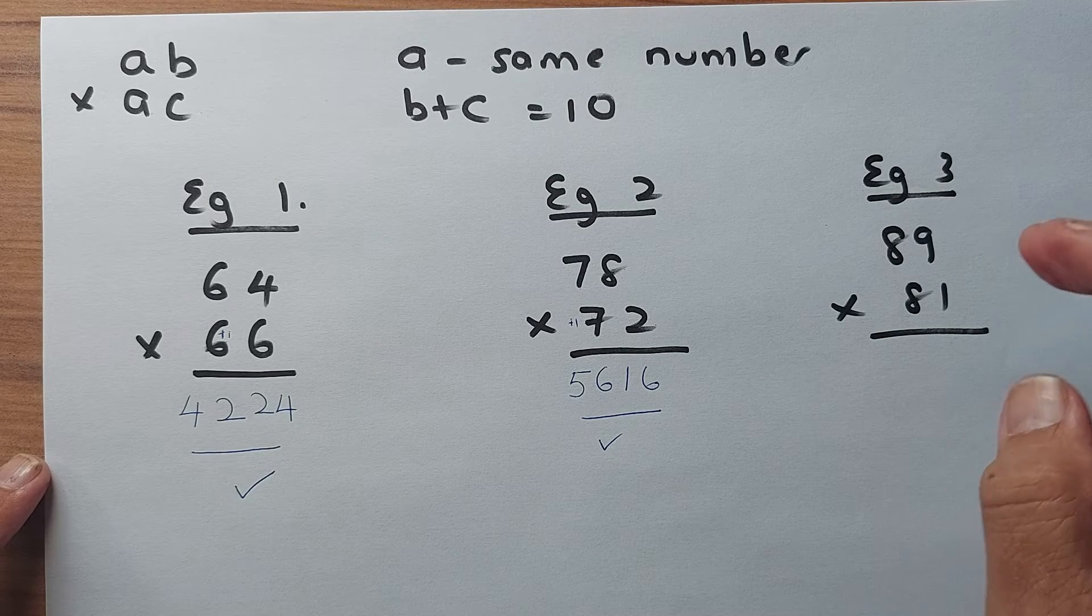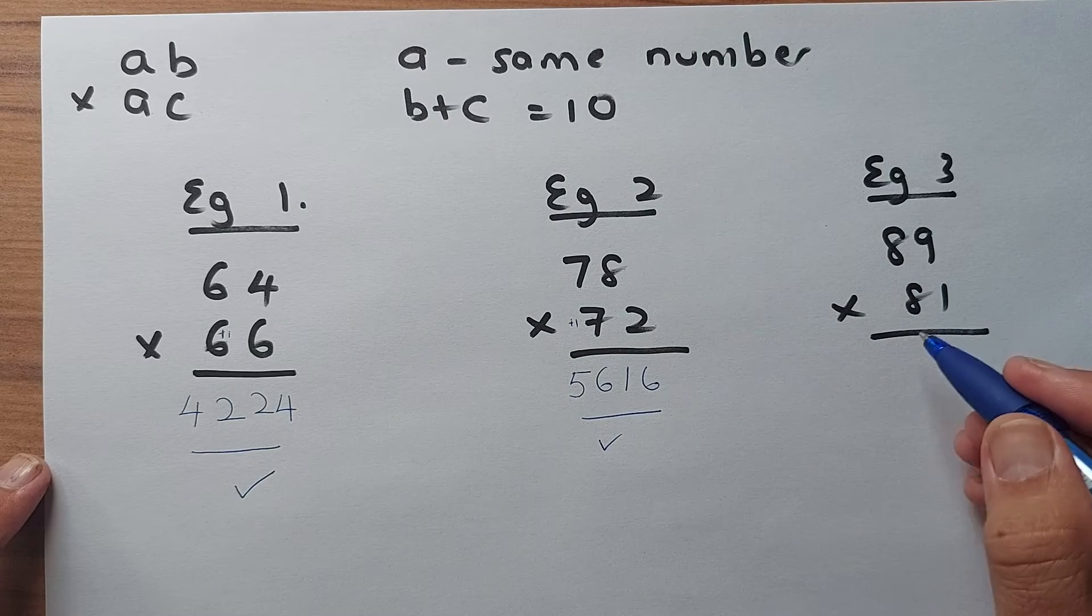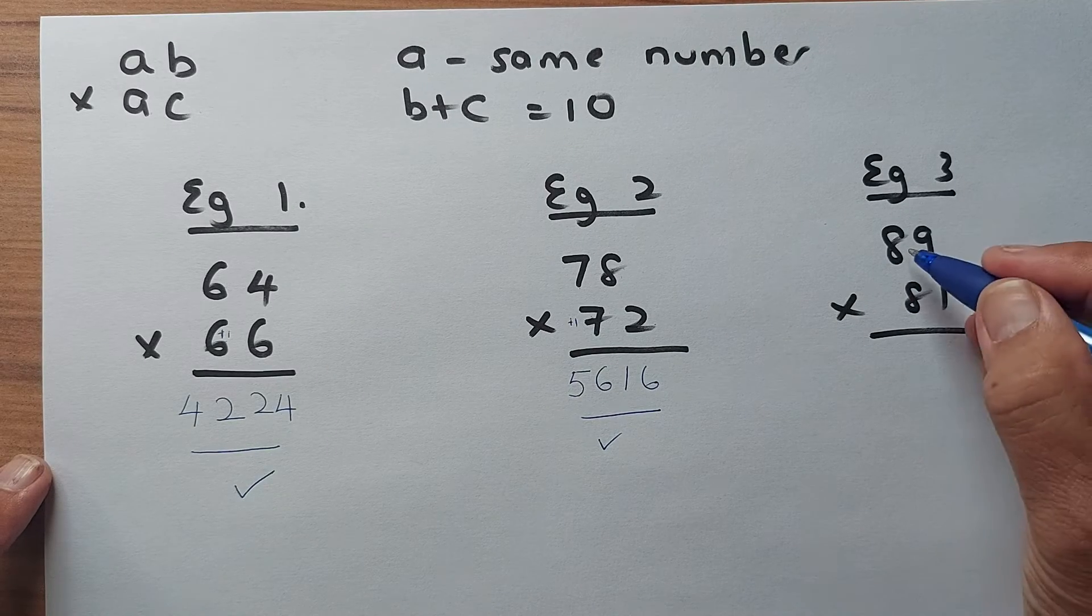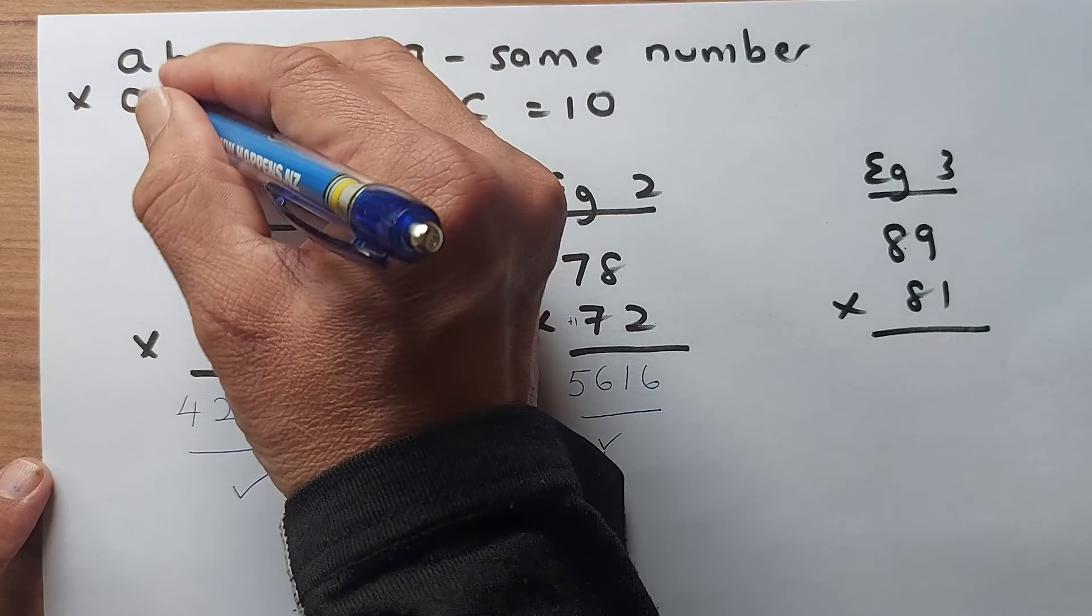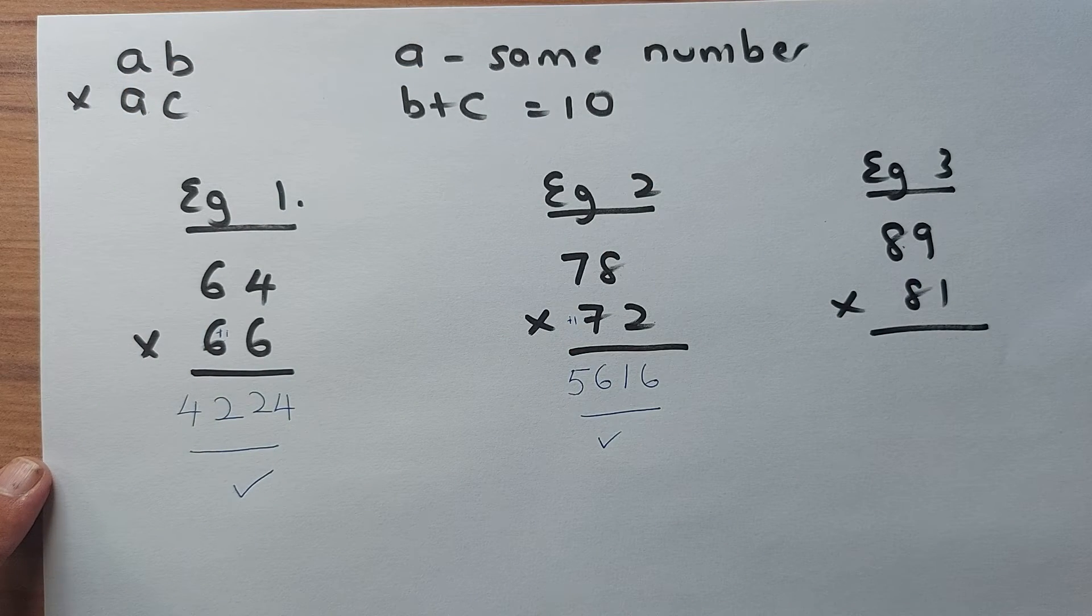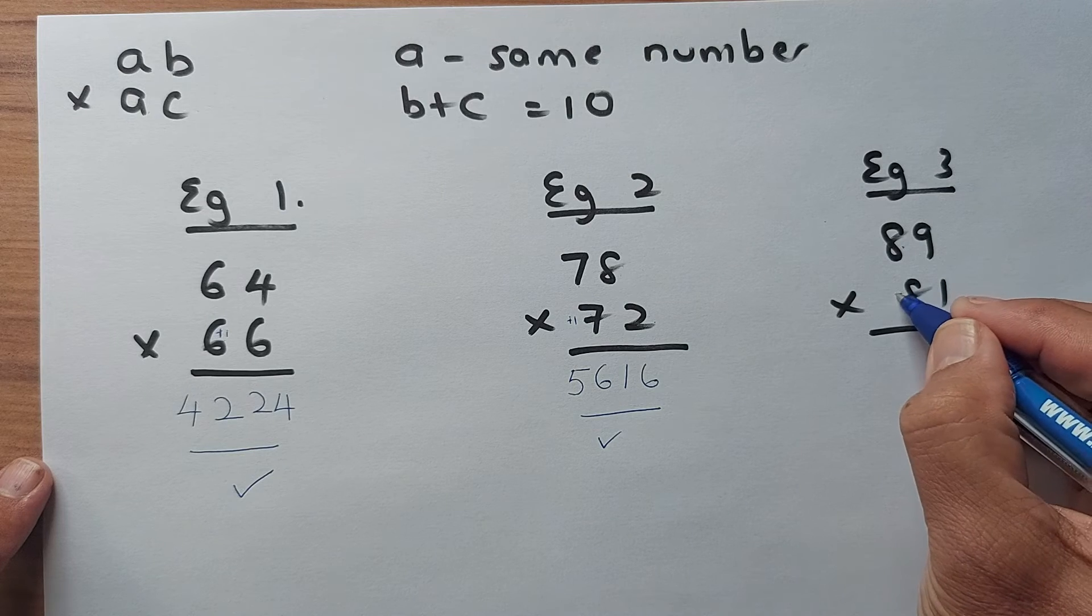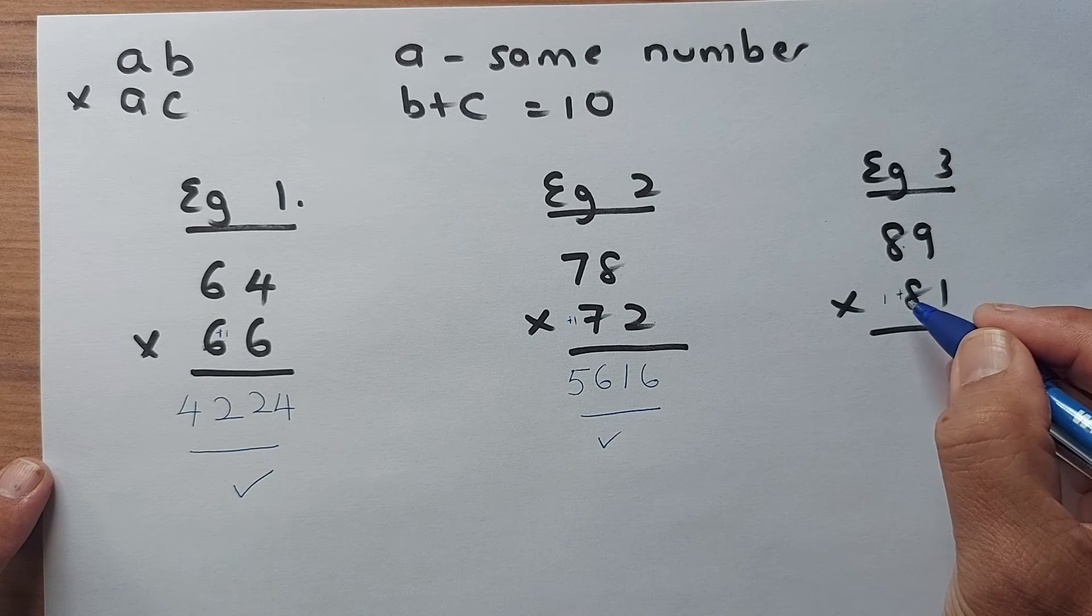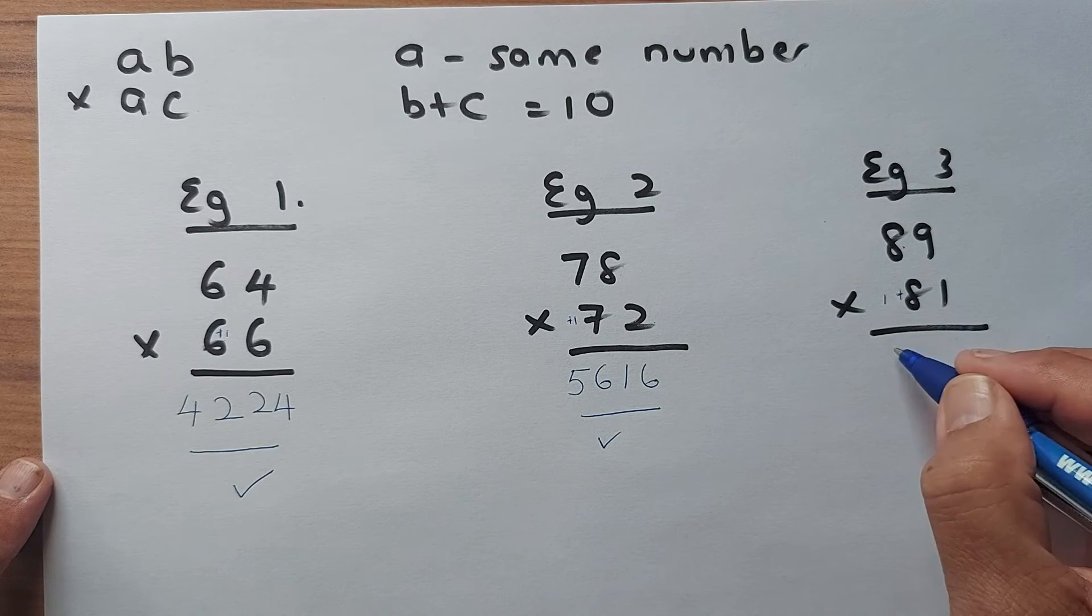Last but not least we have example 3. 89 multiplied by 81. Again 8 and 8 they are the same number so they are the same digit. And then 9 and 1 they add up to 10. So what do you do? You are going to add 1. So 8 becomes a 9. So 8 times 9 is going to be 72.